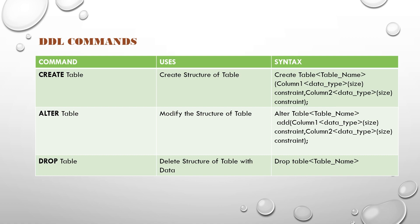The second command is alter table, which is used to modify the structure of a table. For example, if you have an existing table named persons and you want to add specific fields like phone number or city address, you can modify the existing table and add those fields to it.